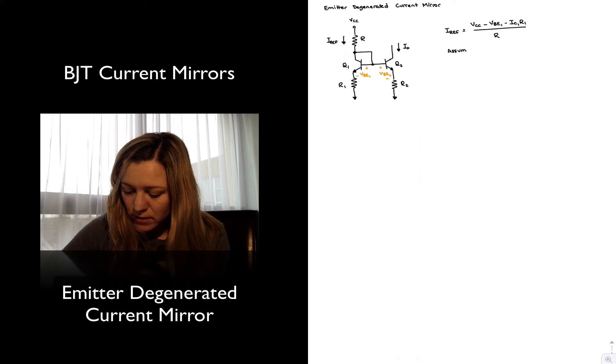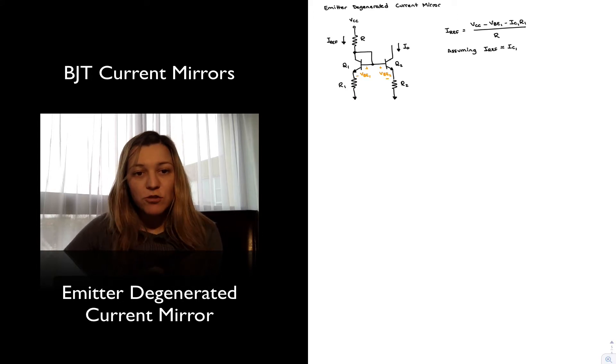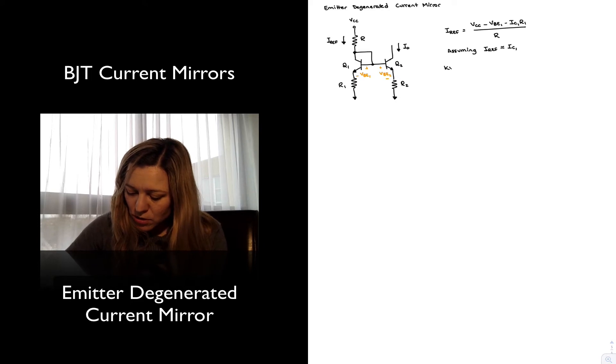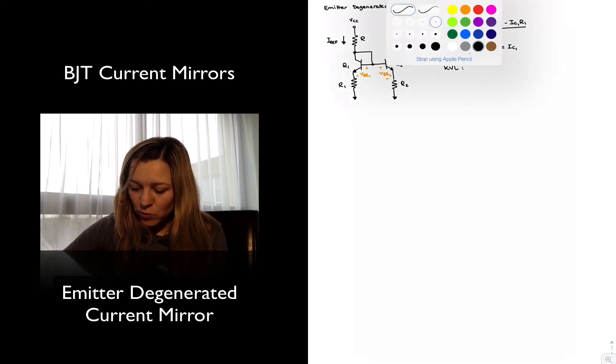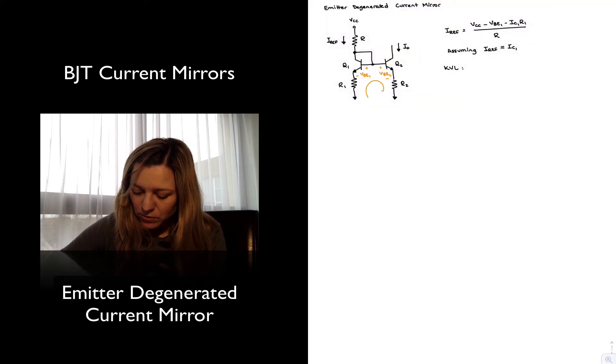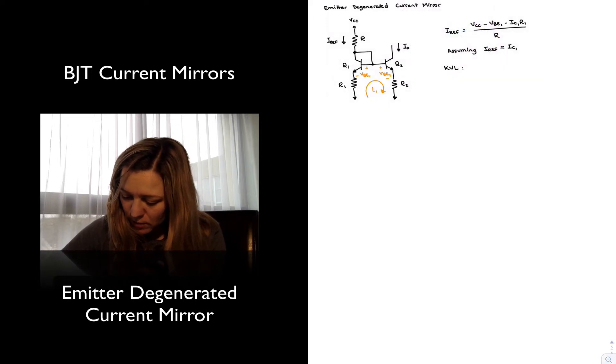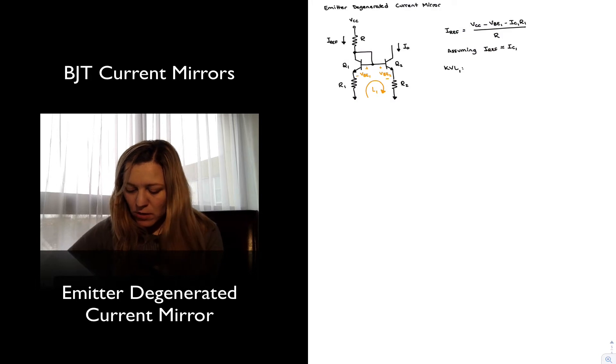And again, I'm going to make the assumption that IREF is approximately equal to IC1. So I'm ignoring base currents, and this is for simplicity of calculations. And I'm going to go ahead and solve the circuit by applying Kirchhoff's voltage law around the loop that's formed at the bottom here. That's my loop L1, let's call it. And so Kirchhoff voltage law applied around loop 1.